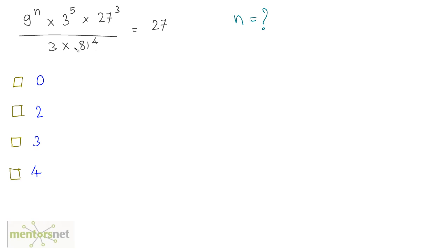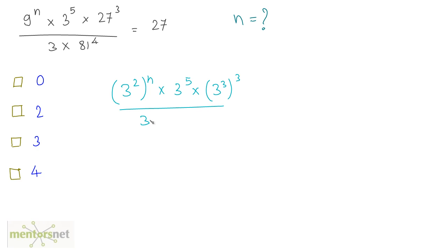Moving on to the third question: what is the value of n if this expression is given? Let us express all terms in powers of 3. So 9 is 3 squared, giving 3 raised to 2n; times 3 raised to 5; and 27 is 3 cubed, so 3 cubed raised to 3; divided by 3; and 81 is 3 raised to 4, so 3 raised to 4, all raised to 4. On the right hand side, 27 is 3 cubed.